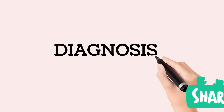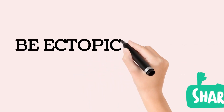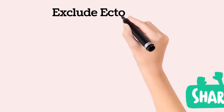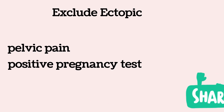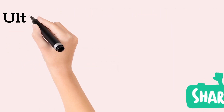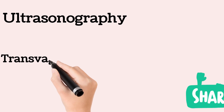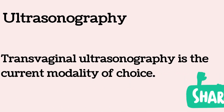Ectopic pregnancy should be excluded in any patient who has pelvic pain and a positive pregnancy test. Pregnancy of unknown location exists when HCG is positive but the site of implantation has not yet been determined. Ultrasonography can reliably confirm intrauterine pregnancy; transvaginal sonography is the current modality of choice, with a gestational sac containing a yolk sac being the earliest confirmation.